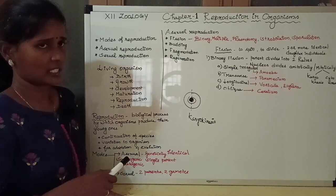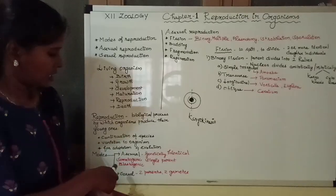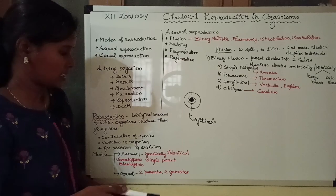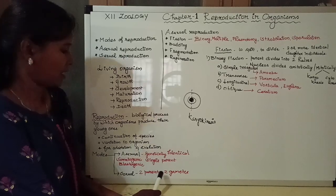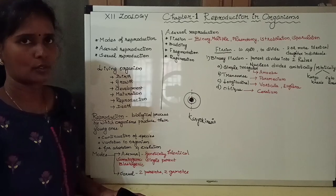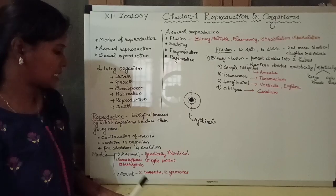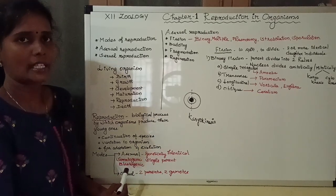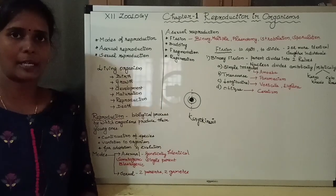Next is sexual reproduction. The next mode of reproduction is sexual reproduction. As the term implies, sexes are involved — two parents are involved. This is biparental reproduction. Gametes are involved: male gamete and female gamete, that is sperm and ova. Coming back to asexual reproduction, since division takes place in somatic cells, this is also called somatogenic or blastogenic reproduction.